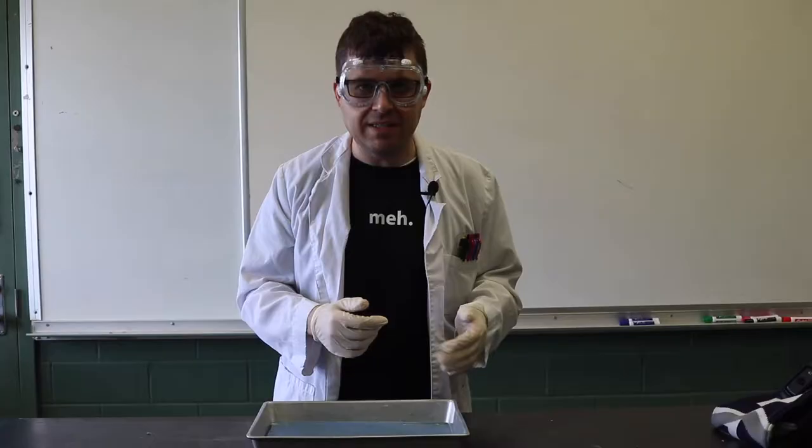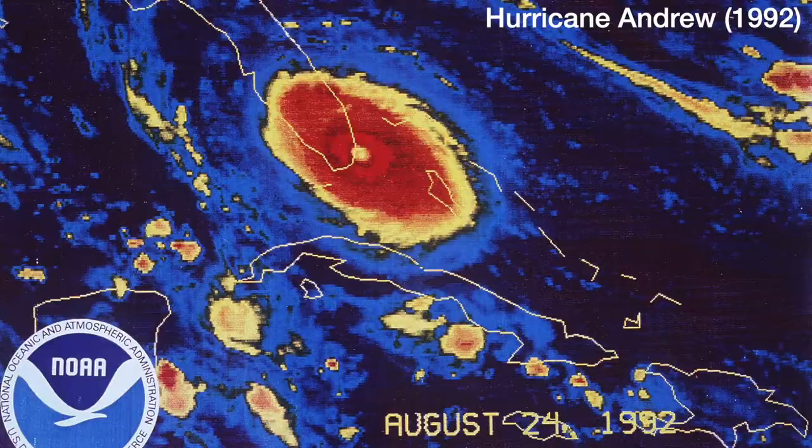Before we get going, we need to understand that every hurricane is a unique weather system. Whether they're found in the Indian Ocean or the North Atlantic, or whether their name is Andrew, Zeta, or somewhere in between, the structure and dynamics are similar, however their effects vary widely.